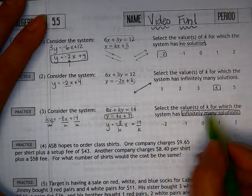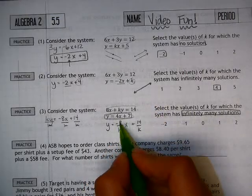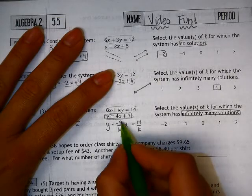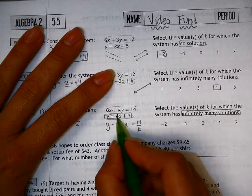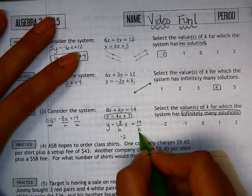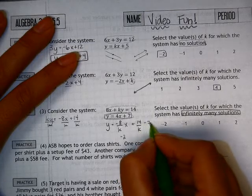If I look, I want negative 8 to turn into a 4. If k was negative 2, negative 8 divided by negative 2 would be 4. And 14 divided by negative 2 would equal negative 7.